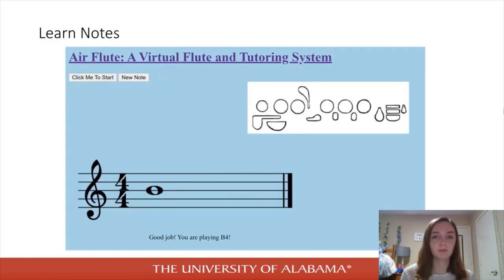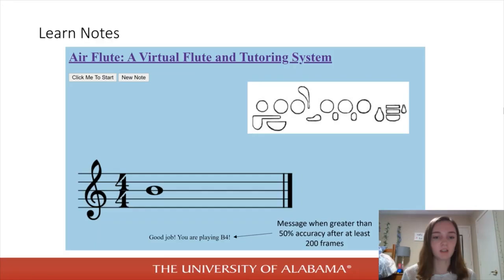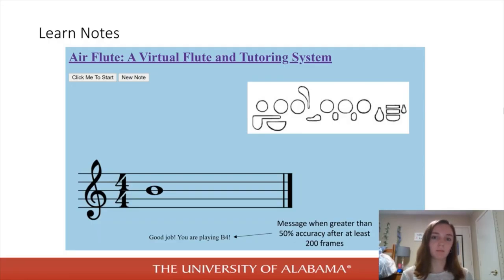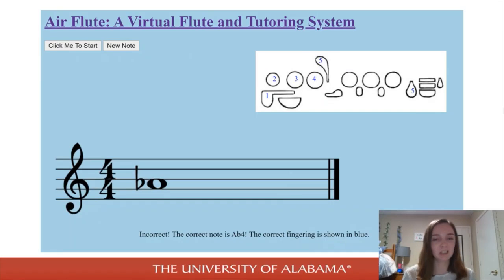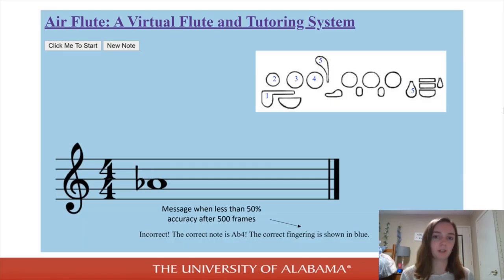This is the learning notes feature of the Air Flute. You click the button in the top left and it generates a random note for you to try. If you get it correct, it gives you a message below for 50% accuracy or greater on more than 200 frames of Leap Motion data. If you get it wrong, it gives you a different message for less than 50% accuracy on 500 frames, and then it shows you the correct fingering in blue on the visual.